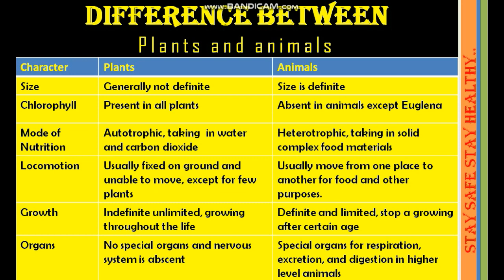Growth: plants have indefinite growth, growing throughout their life; animals have definite and limited growth, stopping after a certain period. Organs: plants have no special organs and the nervous system is absent; animals have special organs for respiration, excretion, and digestion in higher-level animals.